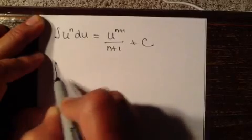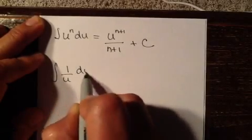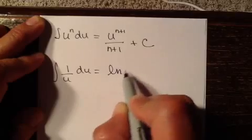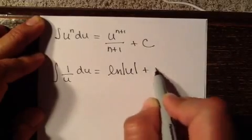When we integrate one over u du, that's just going to be natural log of u in absolute value, and then plus c.